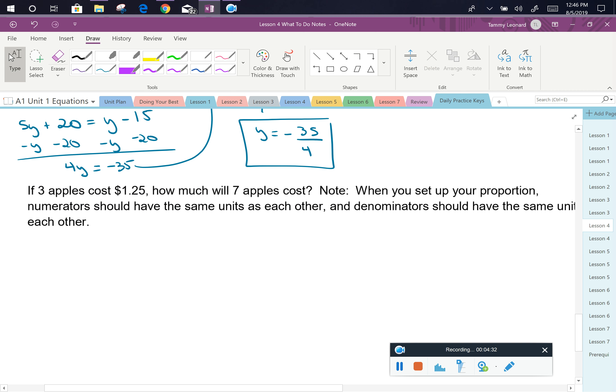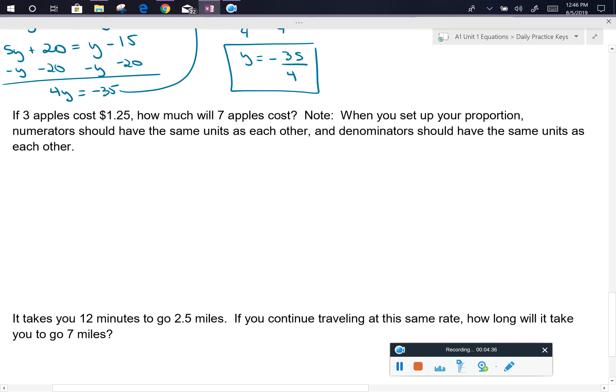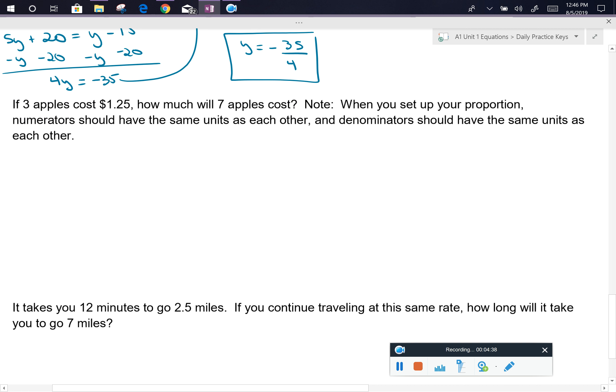Next, we have a word problem. And we can use proportions to help us set up and solve word problems. If 3 apples cost $1.25, how much will 7 apples cost? There's a little note with this problem: When you set up your proportion, numerators should have the same units as each other, and denominators should have the same units as each other.